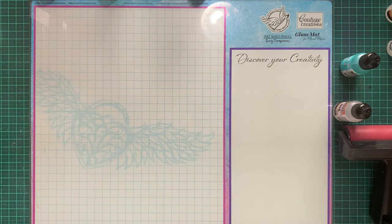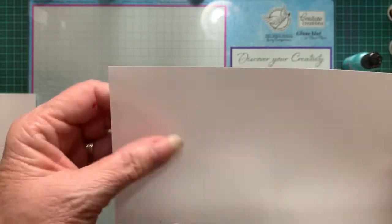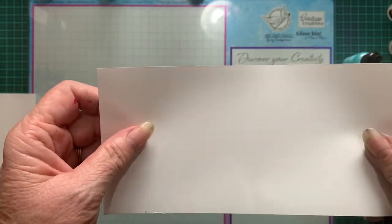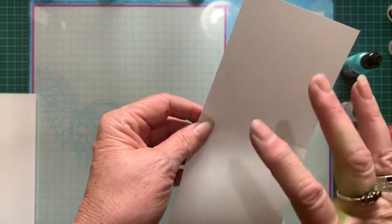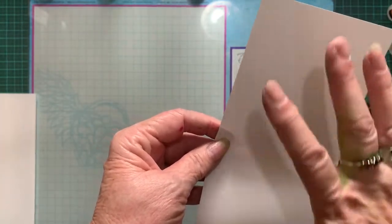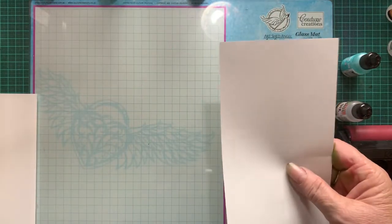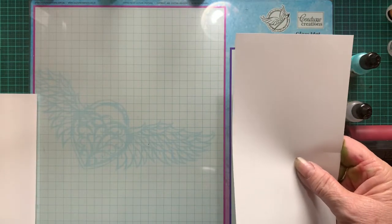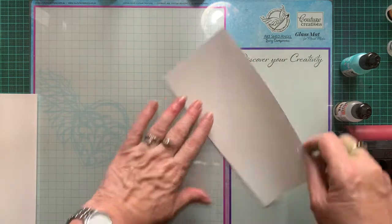We're going to be working on yupo paper. Yupo paper is a synthetic paper and it's non-porous, so when you put all your inks and solutions on it, it doesn't soak in, it just sits on the top. If you try and do this on normal cardstock, the inks will just soak in and they won't move.